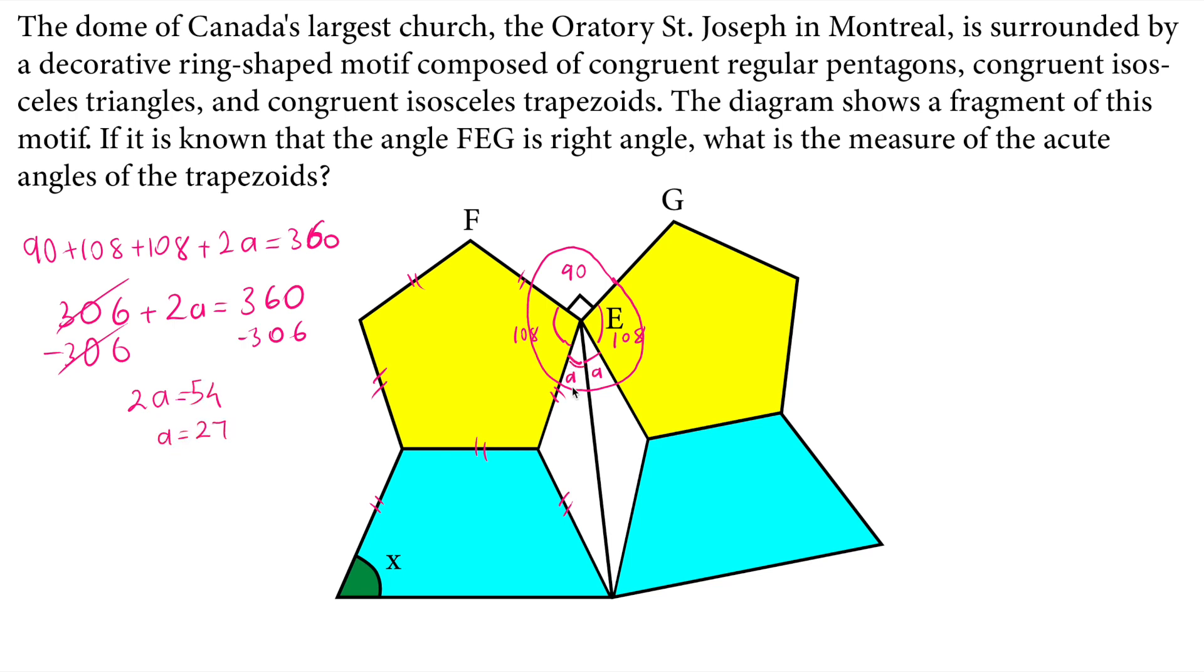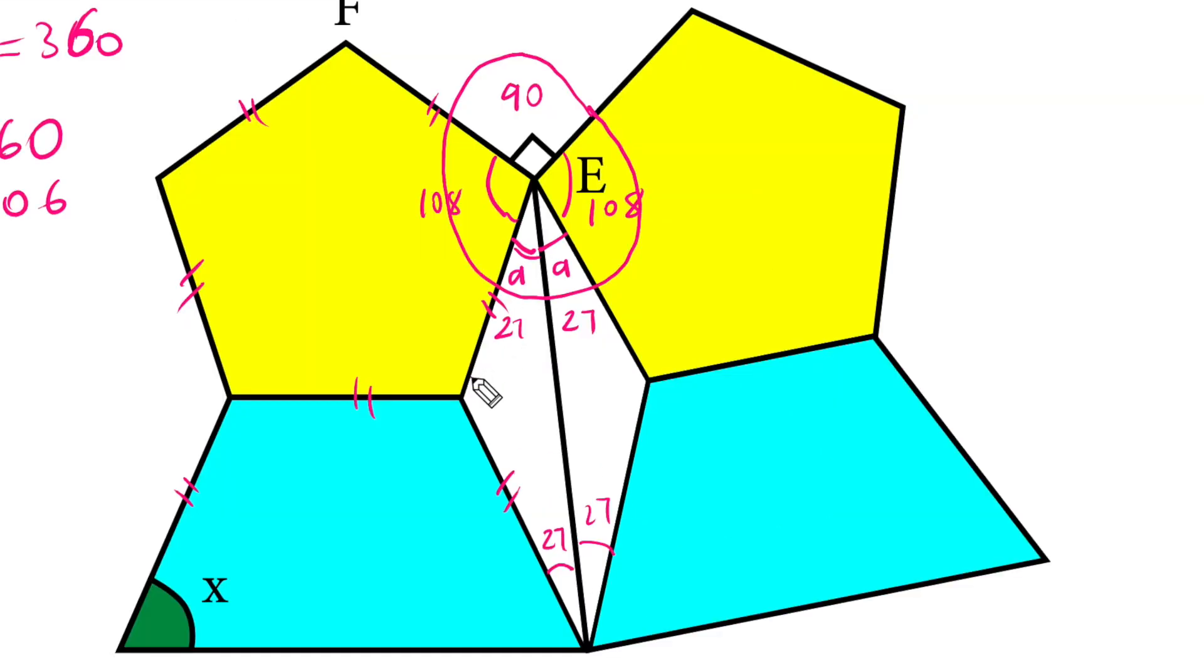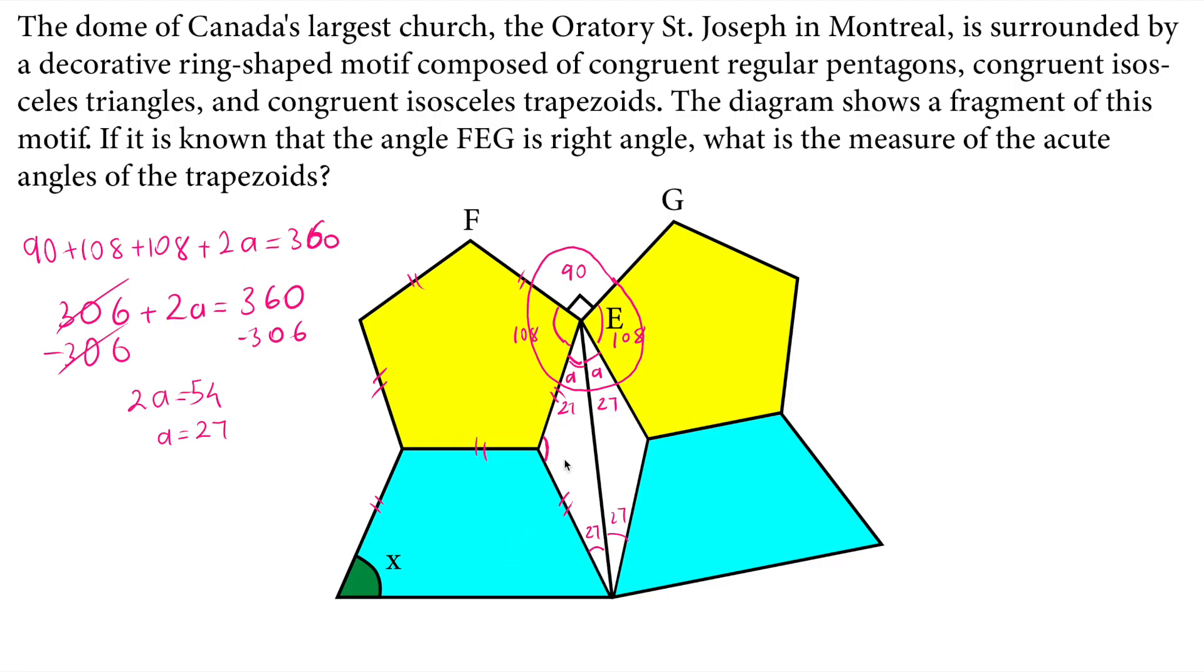So this angle right here is 27 and this is also 27. If that's 27, this is also 27. These angles will be 27. If that is 27, I can find this angle from the triangle sum theorem.